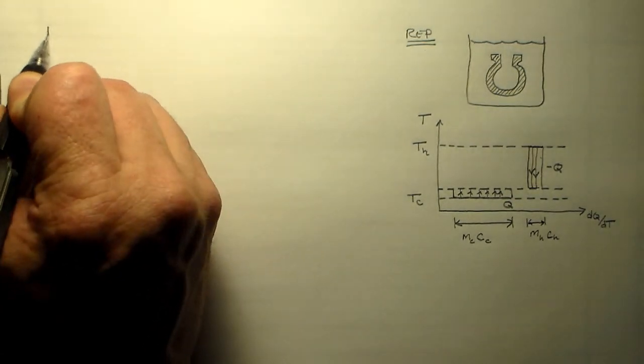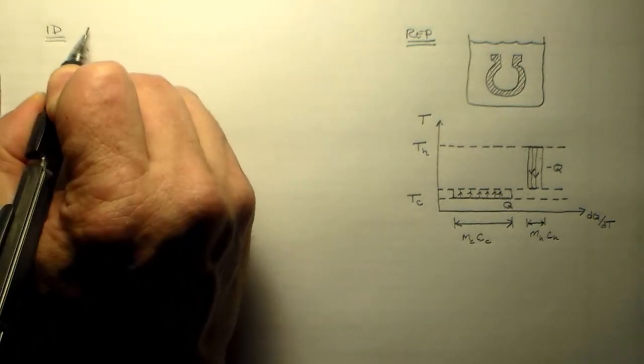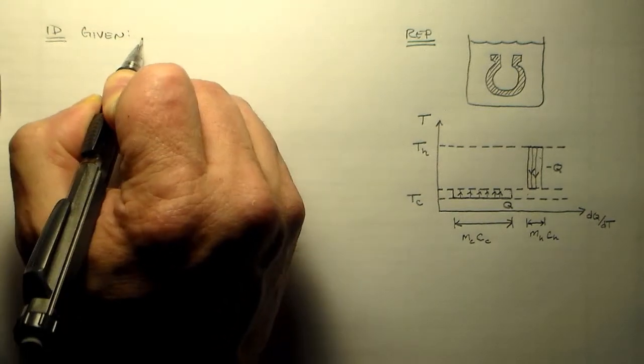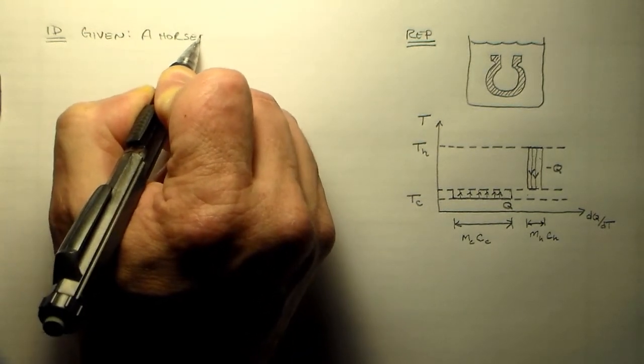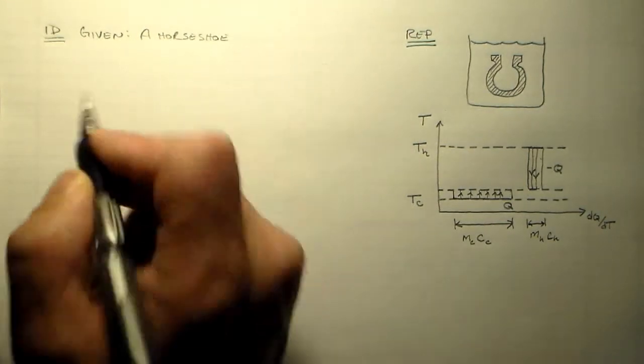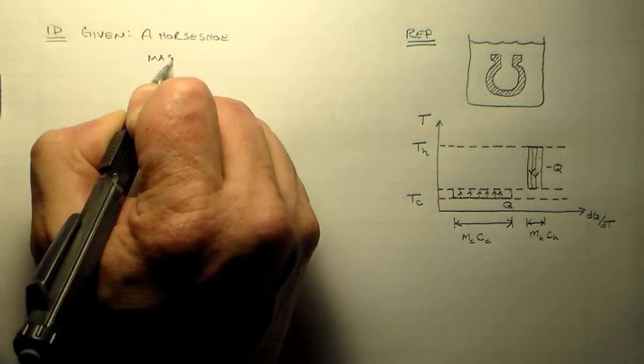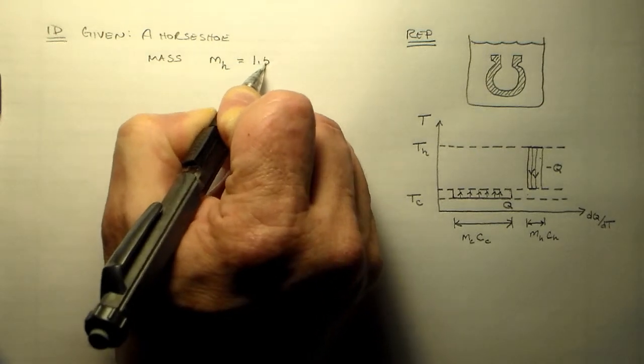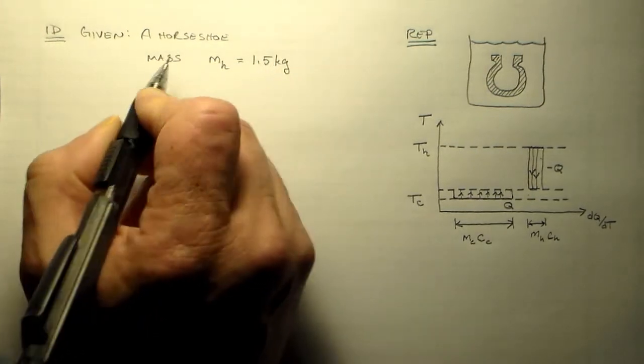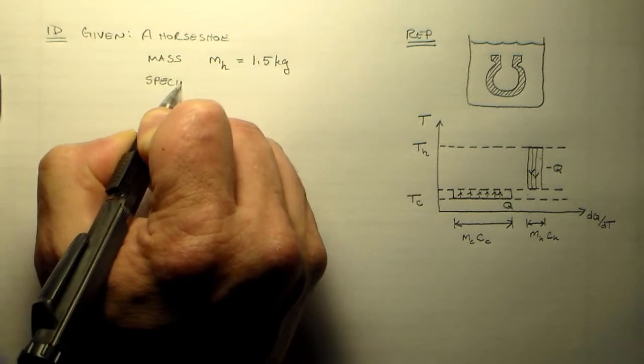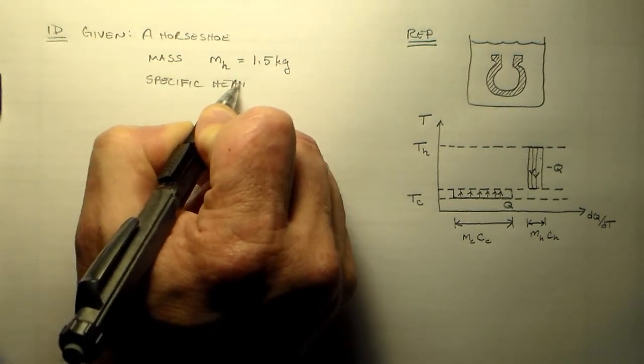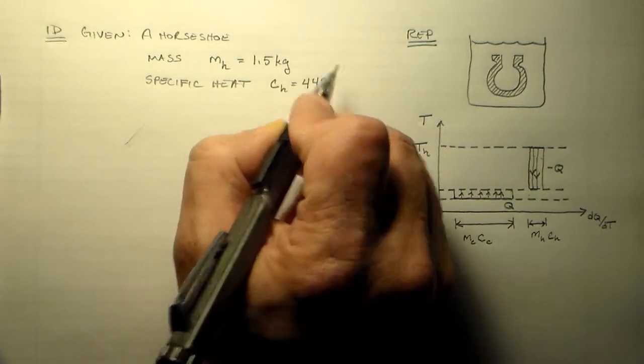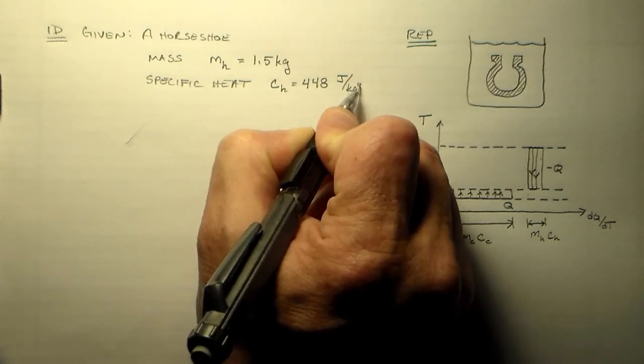So ID. What do we have in this problem? Well, we have a given. We have a horseshoe. It has a mass mh, is what we called it, and we said that was 1.5 kilograms. It has a specific heat. And this we have to look up. It's a specific heat of iron. And that's 448 joules per kilogram per degree C.